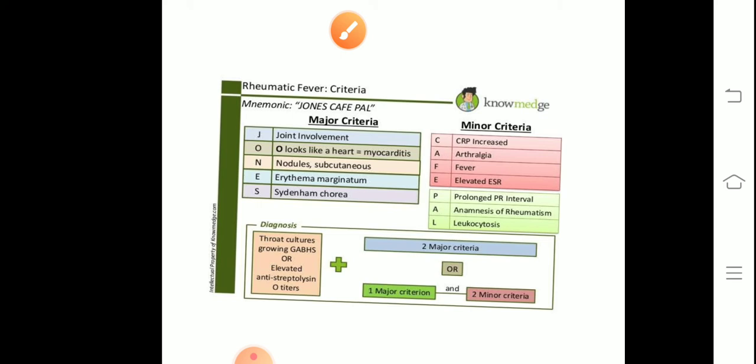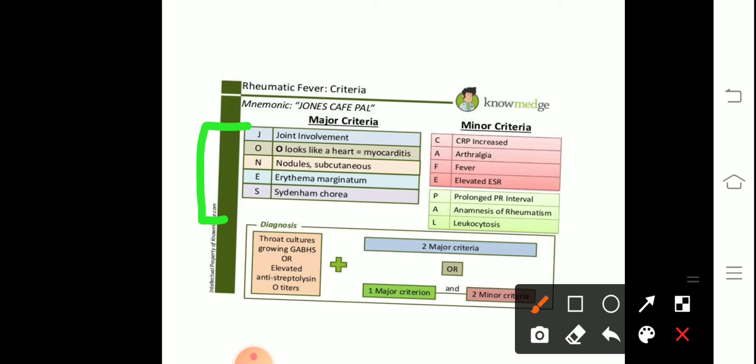Next, the rheumatic fever criteria. This is very important in medicine, बहुत बार यह question आते हैं rheumatic fever पे. तो mnemonic is JOHN'S CAFE PAL. अब rheumatic fever में अब हमारे दो होते हैं minor criteria और एक होता है हमारा major criteria. अब major criteria पे question आ जाता है चार options होते हैं कि major criteria में क्या include होता है. एक option बीच में minor criteria का आ जाएगा तो आपको पता होना चाहिए कि major criteria की category में क्या क्या हैंगे.